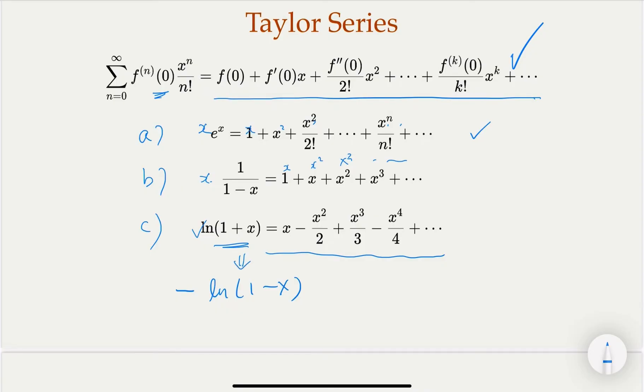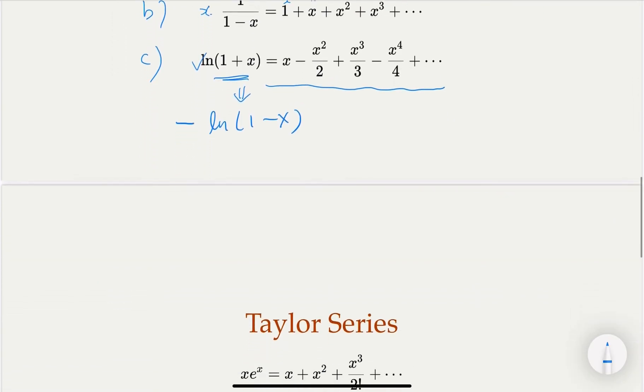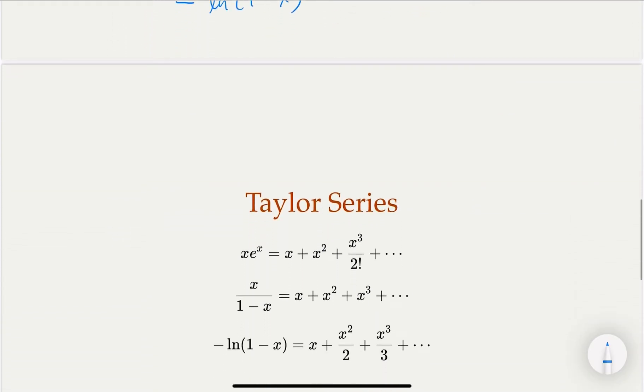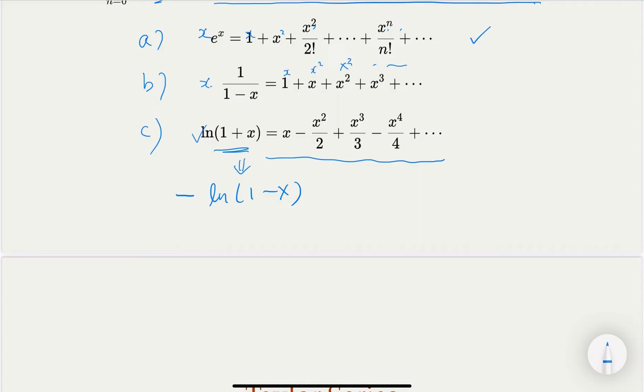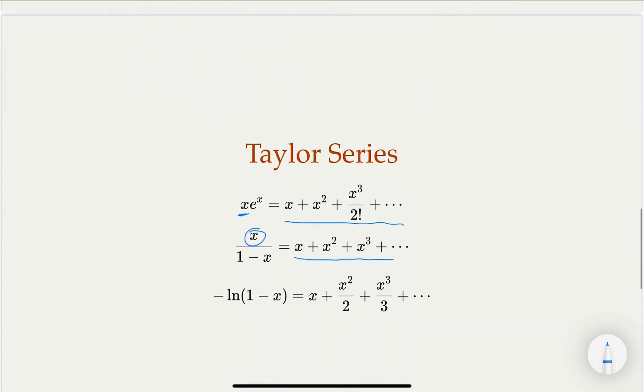Let's rewrite these three equations in a desirable ABC form here. So we multiply x on the first equation, we're going to get this. And we multiply x on the second equation, we got this one. The third one, we're going to replace x with negative x, and then put a negative sign in front of it, and then you're going to get this.